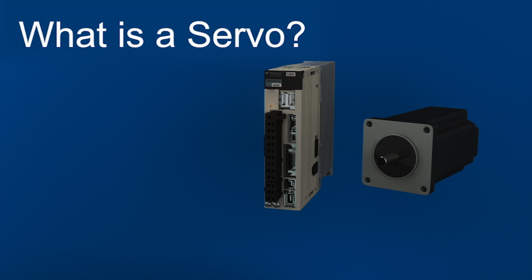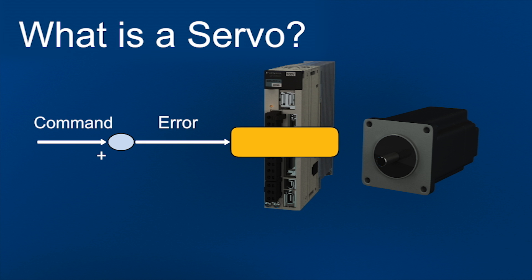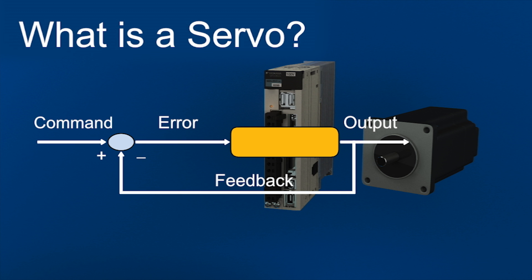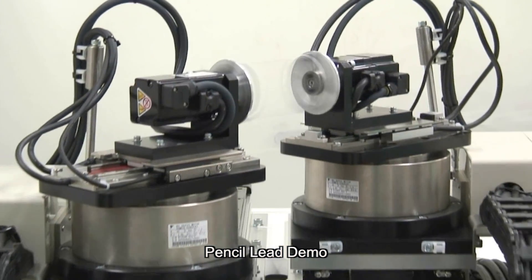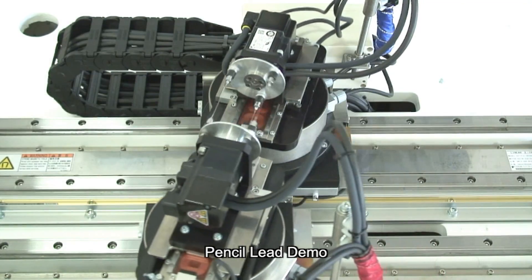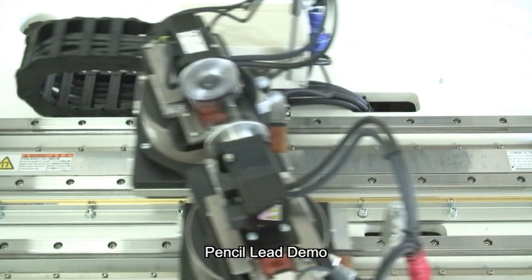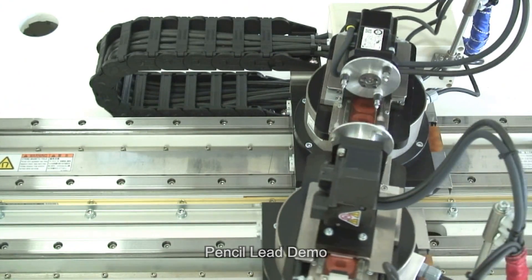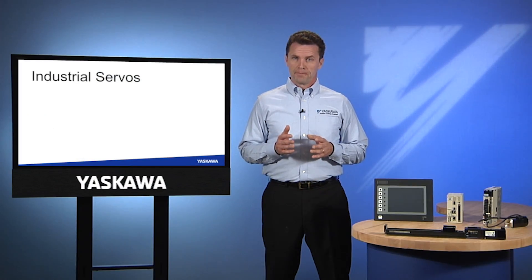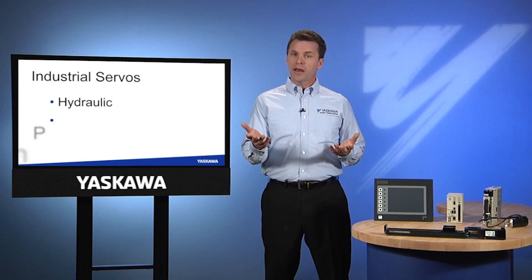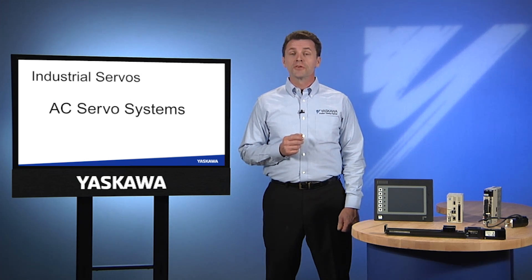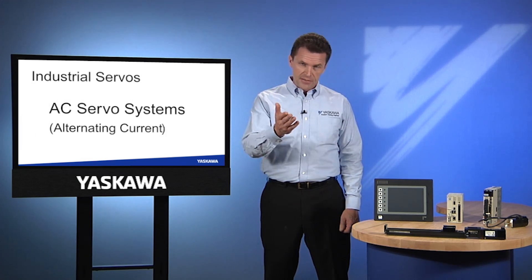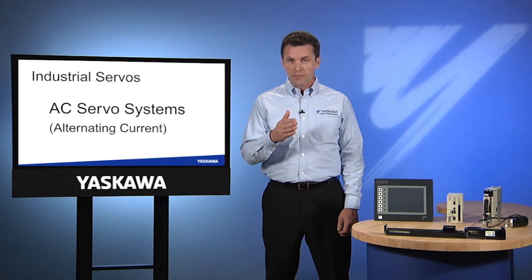Here's a basic definition of a servo: it's a device that produces motion in response to a command, then regulates the speed and direction of that motion in response to feedback. You'll find servos in use on automation systems that require motion with precise control, and especially in systems that need very swift response to commands and exact fidelity to position requirements. The world of industrial servos is a very diverse one. Some servos are hydraulic, some are pneumatic, and others are electromechanical. In recent years, industry has moved more and more toward the use of AC servo systems. AC, of course, refers to the alternating current waveform in the motor during operation.